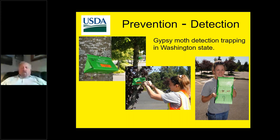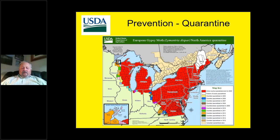Prevention also takes the form of quarantines. This is the federal quarantine for gypsy moth — in this case the European gypsy moth, because it is established in the Northeast. The counties shaded in red are part of what's called the permanently infested area. The idea with a quarantine is that with certain high-risk things, you don't want materials to leave the quarantine area unless they've been inspected or treated in some manner to mitigate the risk of pest movement.